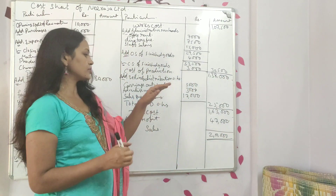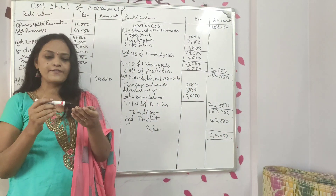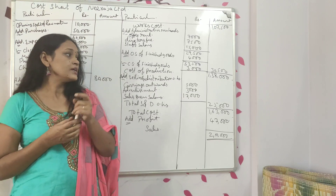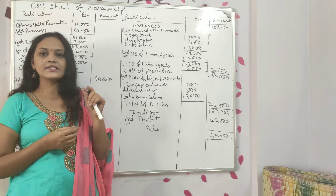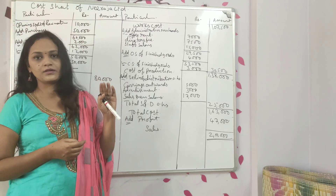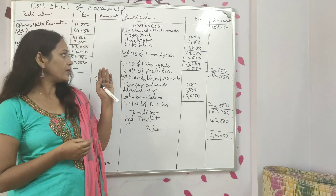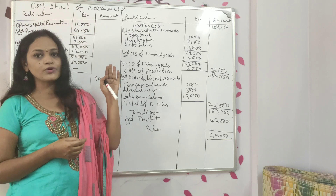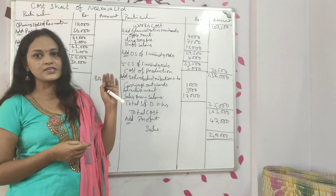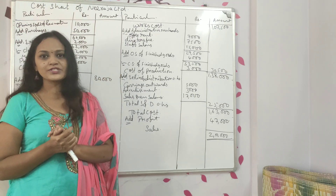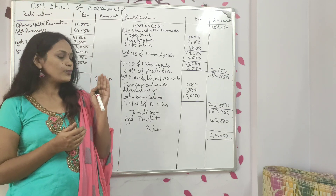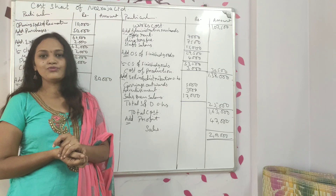This is the way to prepare the cost sheet and find out the profit. What you should check is: which expense comes under which head — factory overheads, administrative overheads, or selling and distribution. If you know that, it will be very easy to do. Thank you for watching — if you like, please put a comment. Thank you.